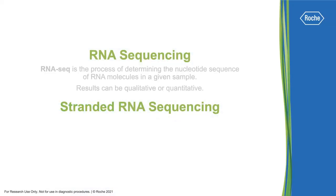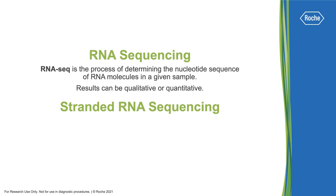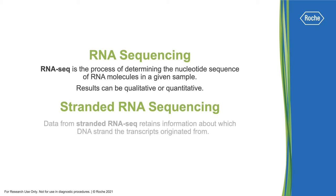RNA sequencing is the process of preparing RNA transcripts of interest for next-generation sequencing to qualify and quantify results. Stranded RNA sequencing is a variation of the workflow that helps determine the DNA strand of origin from which the RNA transcript was copied.